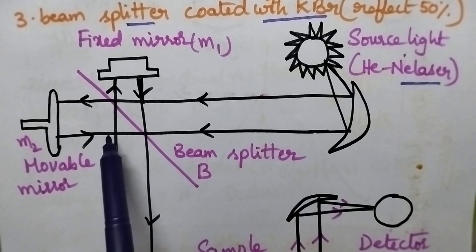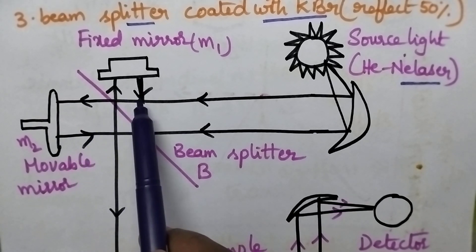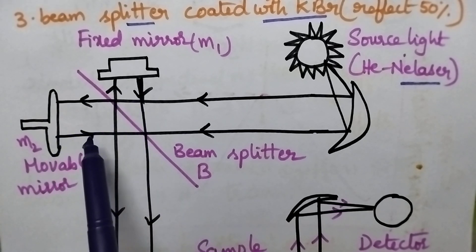With the help of the movable mirror which can be moved, it provides the path difference between the radiations obtained from the fixed mirror and the movable mirror.